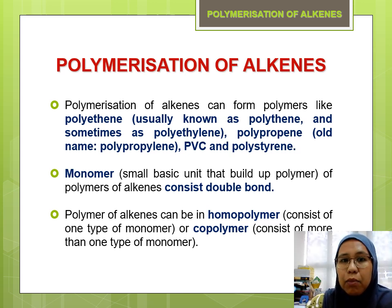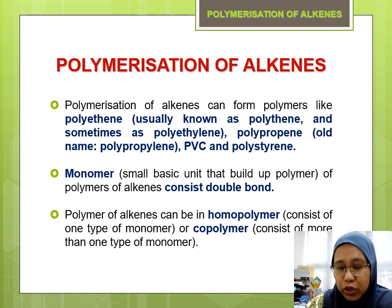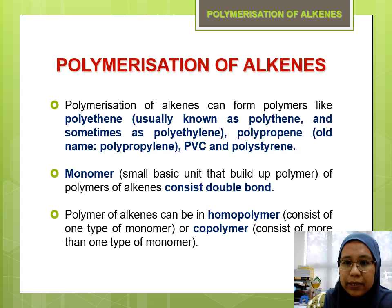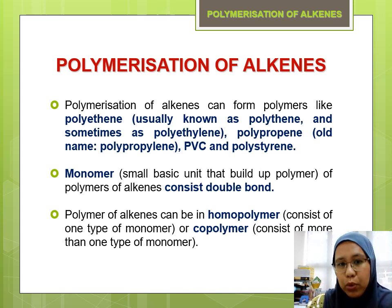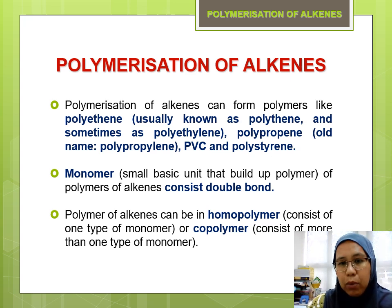We have one monomer — basically, a monomer is the small basic unit that builds up a polymer, and it consists of a double bond for addition polymerization, consisting of a reactant alkene. The polymer of alkenes can be a homopolymer or a copolymer. Copolymer means there is more than one type of monomer, whereas homo means only one type of monomer.